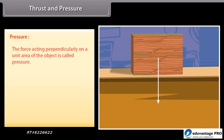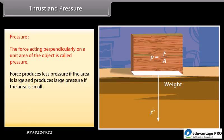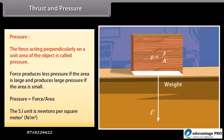Pressure: The force acting perpendicularly on a unit area of an object is called pressure. Force produces less pressure if the area is large and produces greater pressure if the area is small. Pressure = Force / Area. The SI unit of pressure is Newtons per square meter (N/m²).